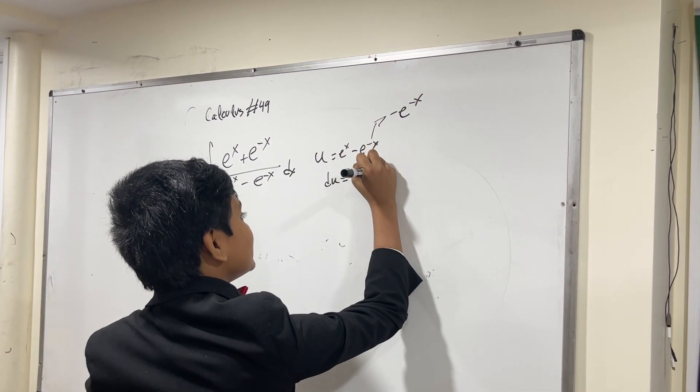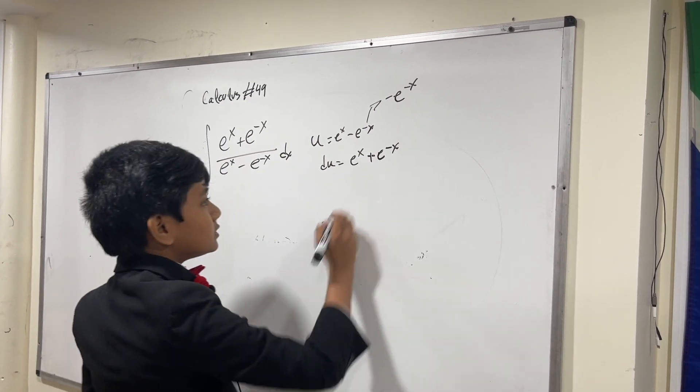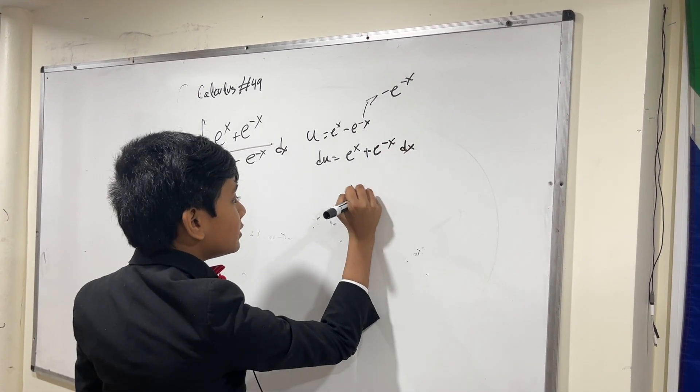Okay. So minus and minus... Oh wait, that's a trigger word for him. I just can't say it. And so we have dx over here. So dx is du.